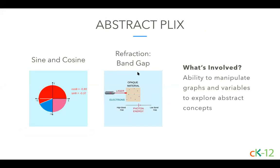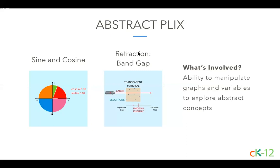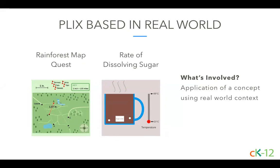In many Plix, students can manipulate graphs, diagrams, or variables. In this Sine and Cosine Plix, students explore how the values of trig functions relate to a given angle. In the Refraction Band Gap Plix, students change the band gap of a substance to see if a photon can fit through. You could have students screenshot a few different states for a graph or set of variables and explain what changed. Some Plix use real-world contexts — in the Rainforest Map Quest Plix, students locate villages on a map using a scale. In the Rate of Dissolving Sugar Plix, students observe what happens to a sugar cube in tea as the temperature changes. Try having students brainstorm other applications of a concept or design their own Plix.